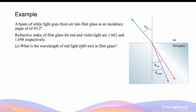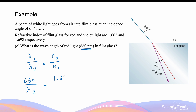What is the wavelength of red light, which was 660 nm in air, inside the flint glass? Using the relation λ₁/λ₂ = n₂/n₁: 660/λ₂ = 1.662/1, so λ₂ = 397 nm. Even though the red light has decreased in wavelength significantly, the color is still red because the frequency remains constant during refraction and dispersion.